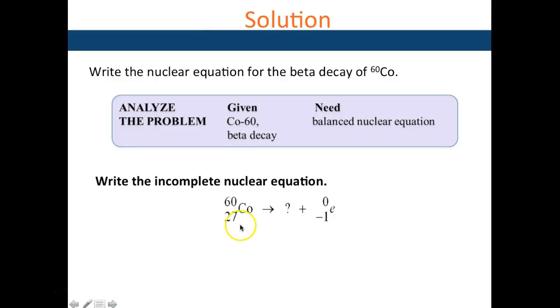Cobalt-27 is undergoing a beta decay. The new element to the right of cobalt is nickel, nickel-28, and the mass is 60. So nickel 28, 60.